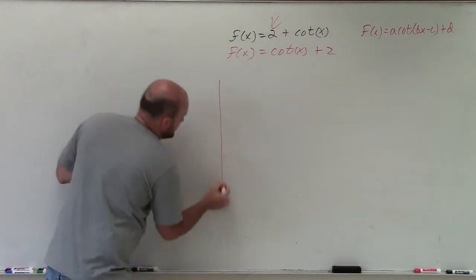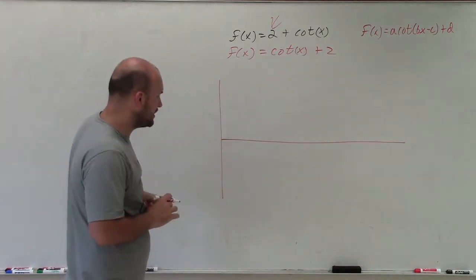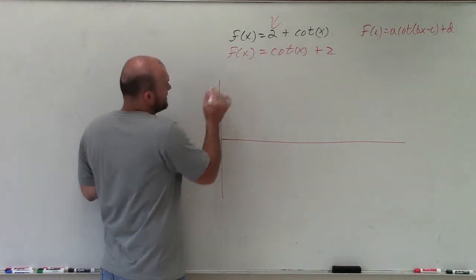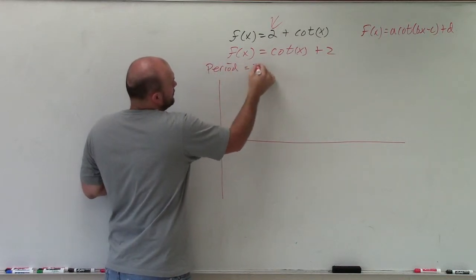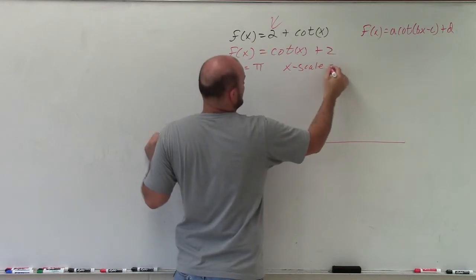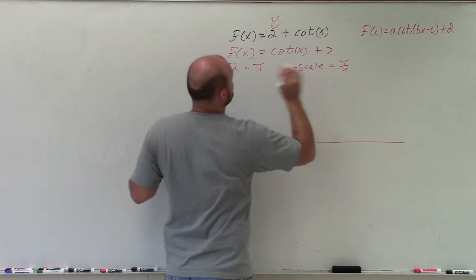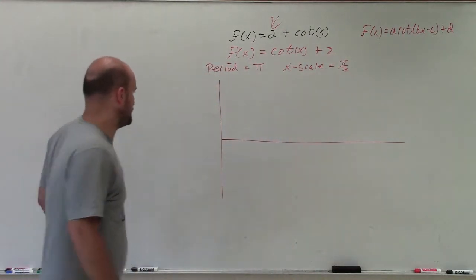So what exactly does the parent graph look like? Well, let's draw two initial periods here. The parent graph, remember, has a period equal to π, has an x-scale at π/2, and there's no amplitude and so forth.